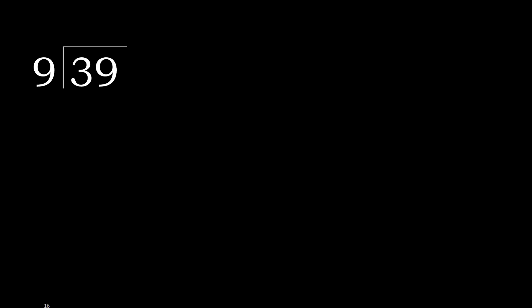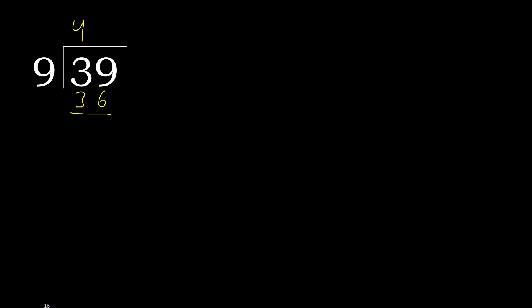39 divided by 9. 3 is less, therefore next. 39 is not less, therefore with 39: 9 multiplied by which number is nearest to 39 but not greater? 9 multiplied by 5 is greater. 9 multiplied by 4 is 36, which is not greater. 39 minus 36 equals 3.